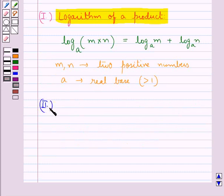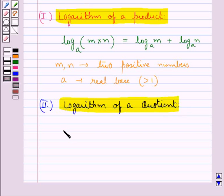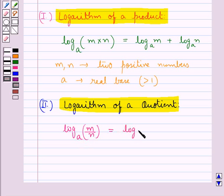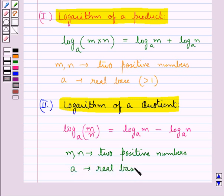The next property we discuss is the logarithm of a quotient. According to this, the logarithm of the quotient of any two positive numbers to any real base greater than 1 is equal to the logarithm of the numerator to the same base minus the logarithm of the denominator to the same base. Here, m and n are two positive numbers and a is a real base greater than 1.